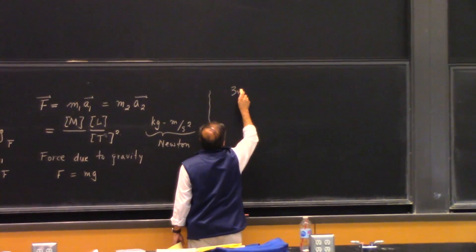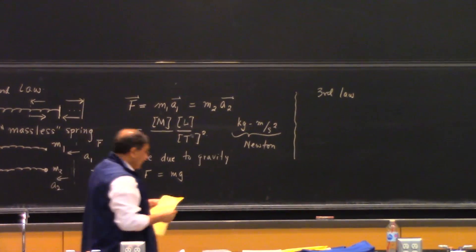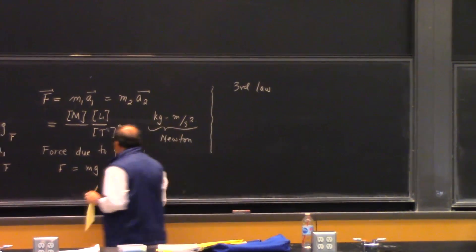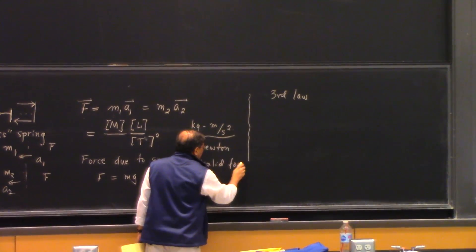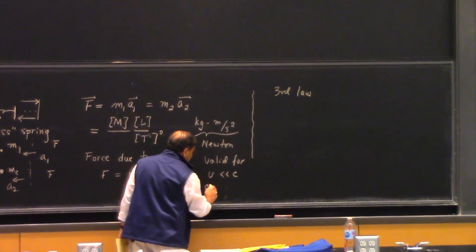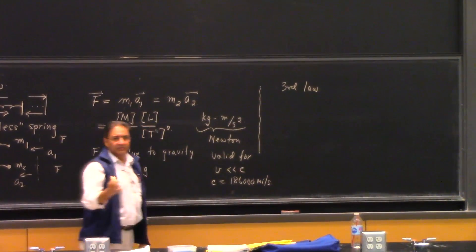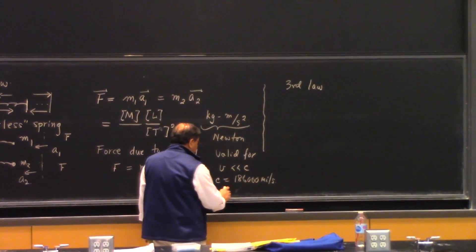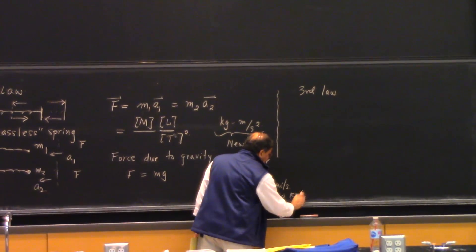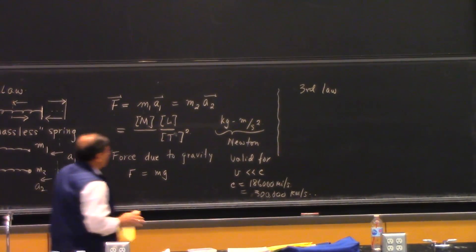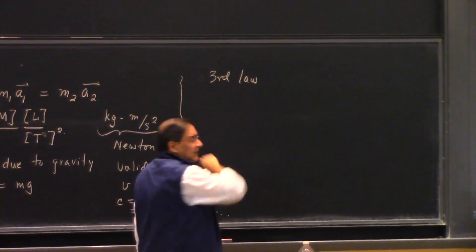Newton's Second Law is valid for velocities much less than c, the velocity of light, which is approximately 186,000 miles per second or roughly 300,000 km/s. Now, Newton's Third Law is a fascinating and complicated law. It tells us about the concept of action and reaction.